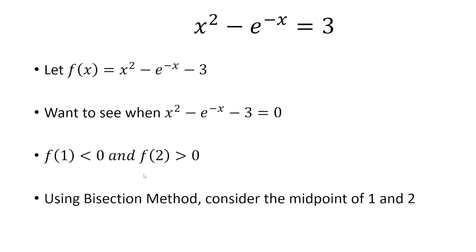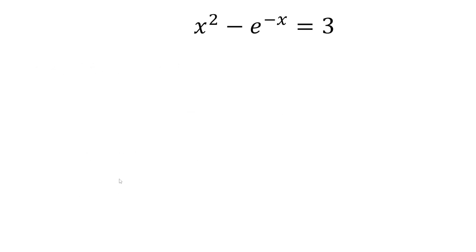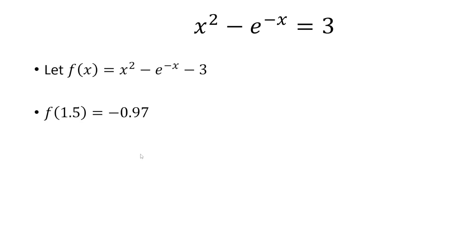So the bisection method says to consider the midpoint of those two values. The midpoint of 1 and 2 is going to be 1.5. So let's plug in 1.5 to get negative 0.97.